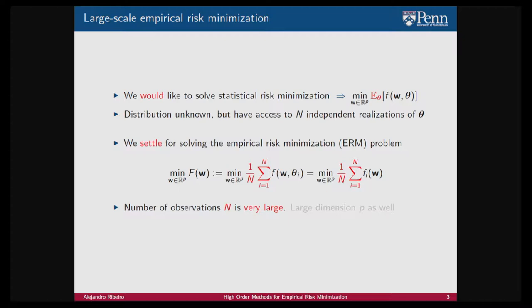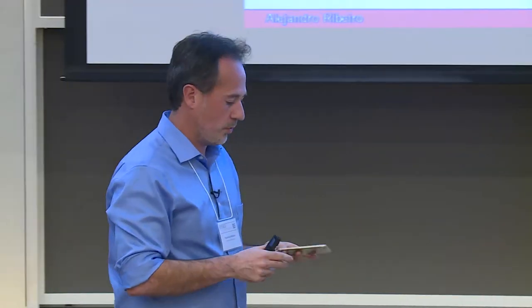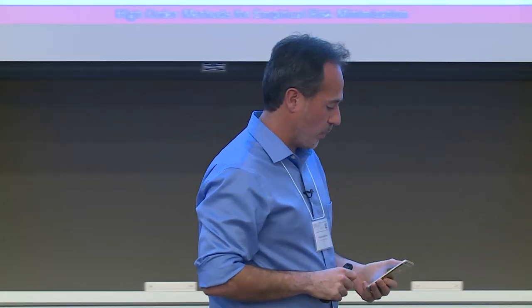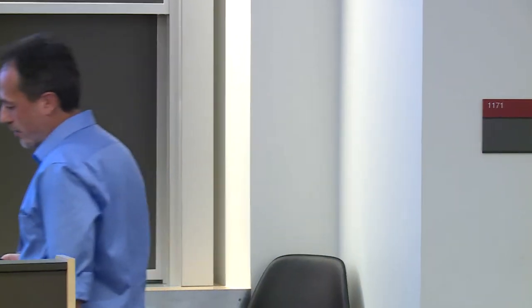Instead of solving that statistical problem, you settle for solving the empirical risk minimization problem, where your goal is to minimize the empirical sum or empirical risk, where all the theta_i's have been drawn i.i.d. from the distribution of theta. Towards the end of the talk, I want you to remember that the problems we ultimately want to solve are statistical risk minimization problems, and we should exploit the relationship between these two.